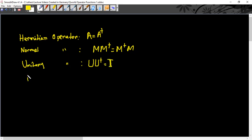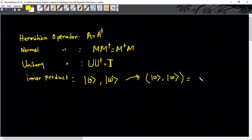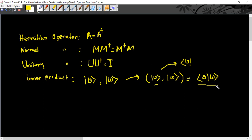Now, what is an inner product? Inner product is needed to define the positive operator and the positive definite operator — they talk about these two things in this section, that's why I'm defining inner product. If we have a vector v and vector w on a vector space, then the inner product of these two vectors is defined as phi comma w, and we usually write this as the bra-vector v multiplied by the ket-vector w. So v is in the first position, so we take the bra-vector v and multiply it by the ket-vector w. This is the inner product.